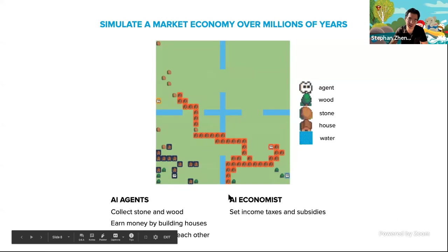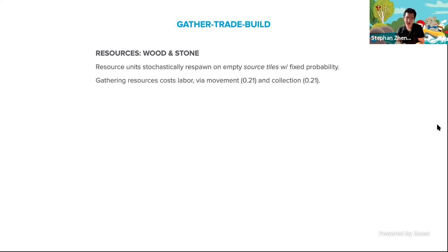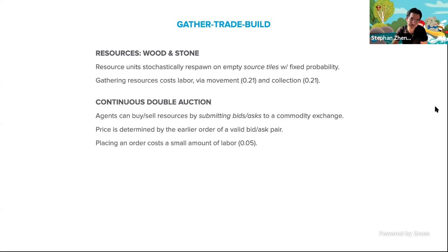At the same time, there's also a government controlled by the AI economist that will set income taxes and subsidize agents, transferring wealth gained through these taxes. The simulation has a number of important low-level details. These resources will stochastically respawn in empty source tiles with some fixed probability yielding wood and stone. All activities the agents can do — moving around, gathering resources, and building houses — will cost some amount of labor. For instance, moving one tile costs 0.21 in some unit of labor.